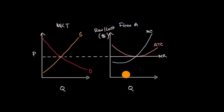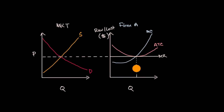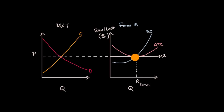That equilibrium price defines the firm's marginal revenue — not just for this firm, but for all participants in the market. The rational quantity for this firm to produce is where marginal revenue intersects marginal cost. It's also the point where you have zero economic profit — where at that quantity, average total cost equals marginal revenue. If marginal revenue were higher than average total cost, other firms would enter the market due to positive economic profit. If marginal revenue is below average total cost, firms would be running economic losses and would exit the industry.